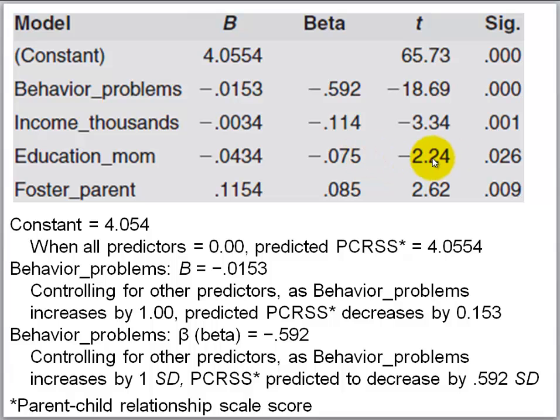Correlations of ±0.1 are designated as indicative of small effects, so this beta of minus 0.075 is just a little closer to zero, conveying a weak — or even very weak — relationship between mom's education and parent-child relationship score. Even though the relationship is weak, it is statistically significant at the 0.05 level, basically because of the large sample size of around 600, giving us lots of statistical power.